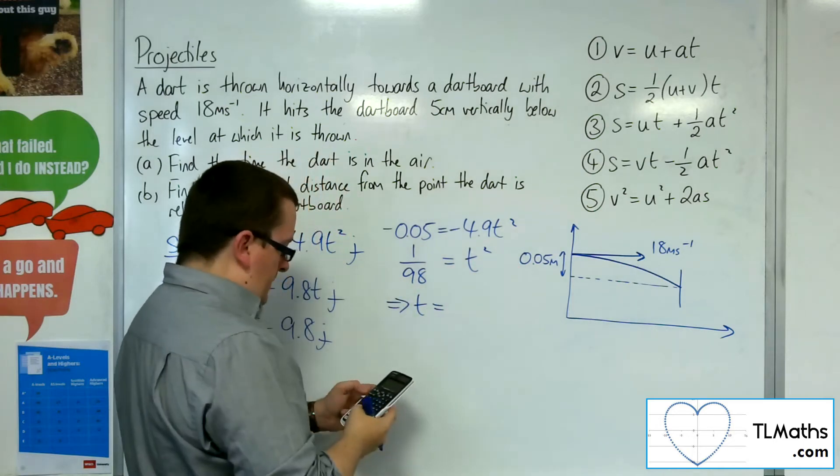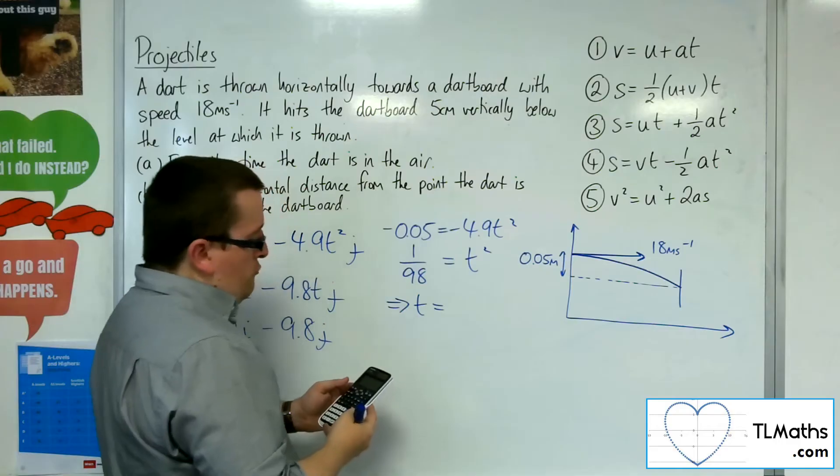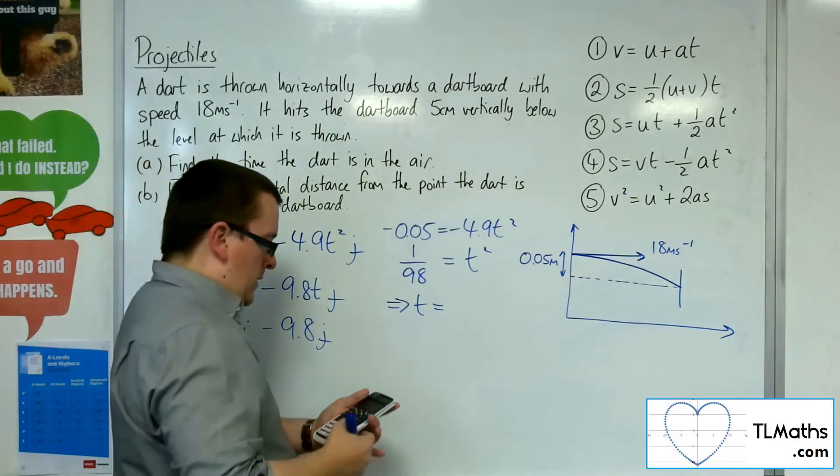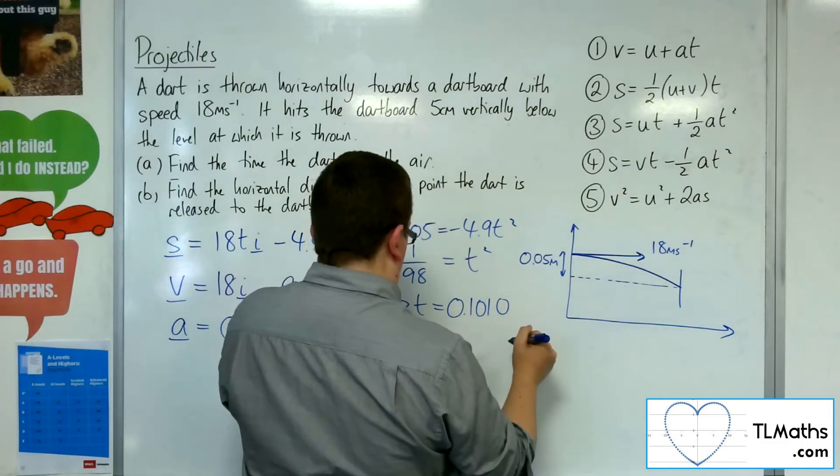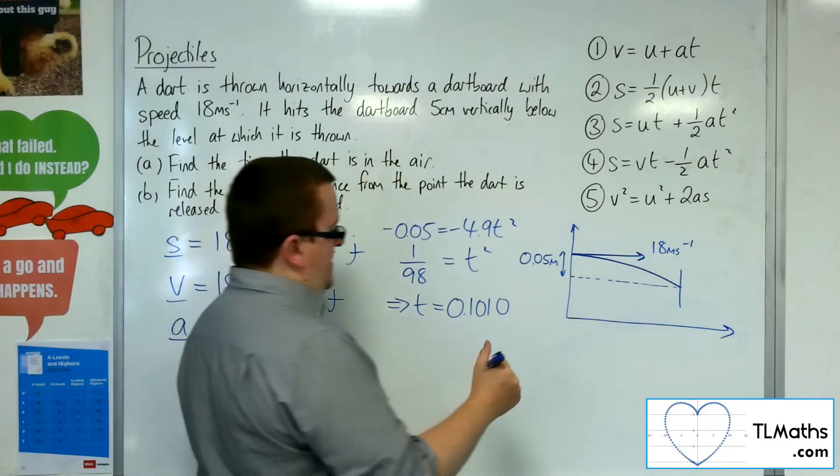Right, then I'm going to square root that. Now I actually get root 2 over 14, which is 0.1010 to four decimal places.